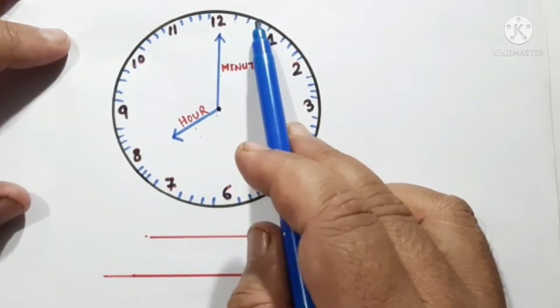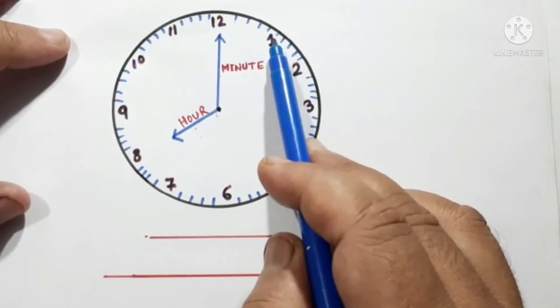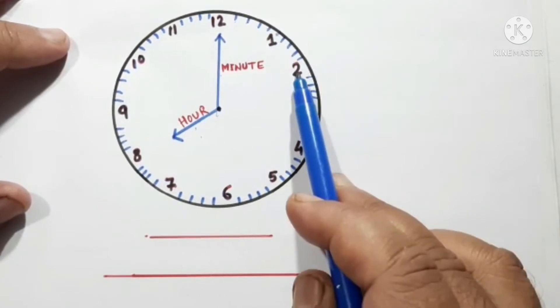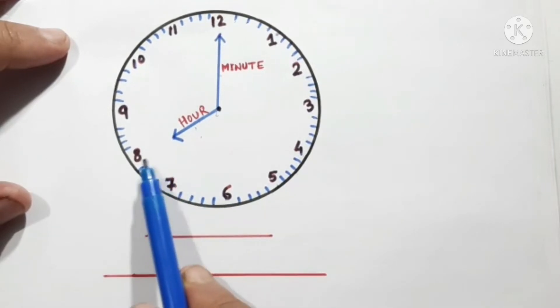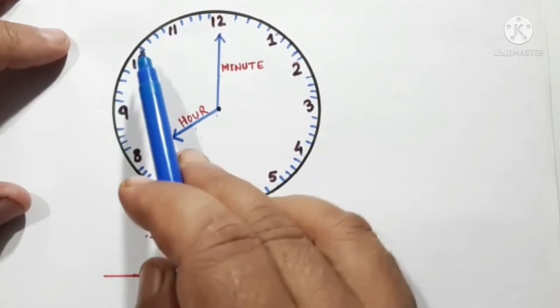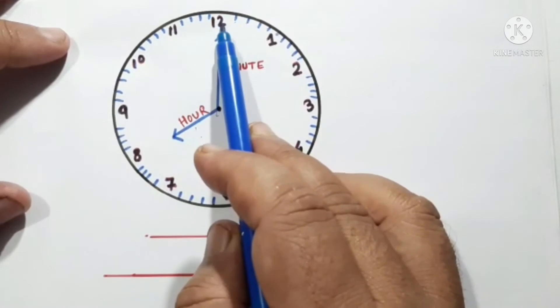1, 2, 3, 4, 5. So this is 5. This is 10, 15, 20, 25, 30, 35, 40, 45, 50, 55, and 60.